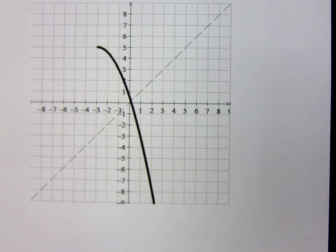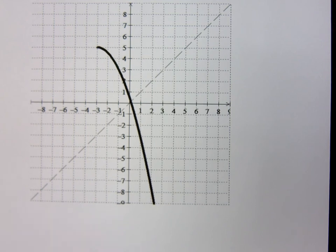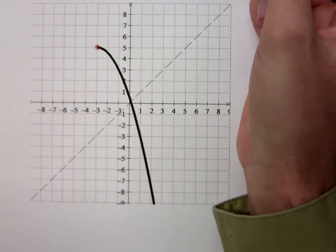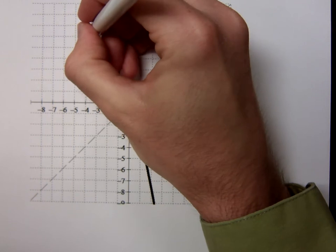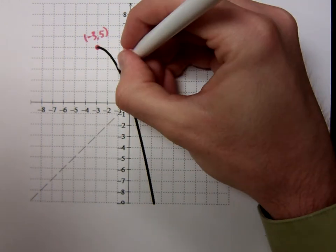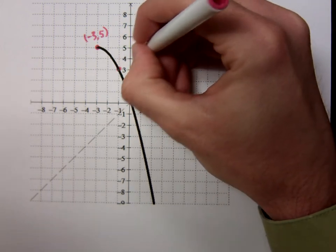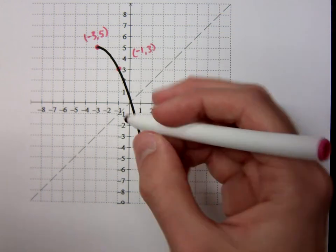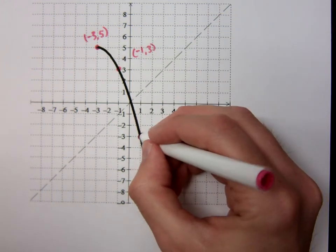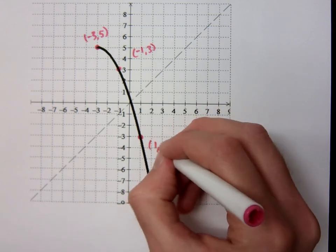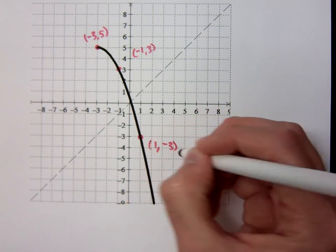Now, for me to find the inverse, I need to be able to clearly identify some points that are on the original. This guy looks like a nice, clear point. What do we have here? Negative 3, 5. I've got another nice point maybe right here. And so that's with coordinates negative 1, positive 3. Maybe another nice one here. And that's 1, negative 3.